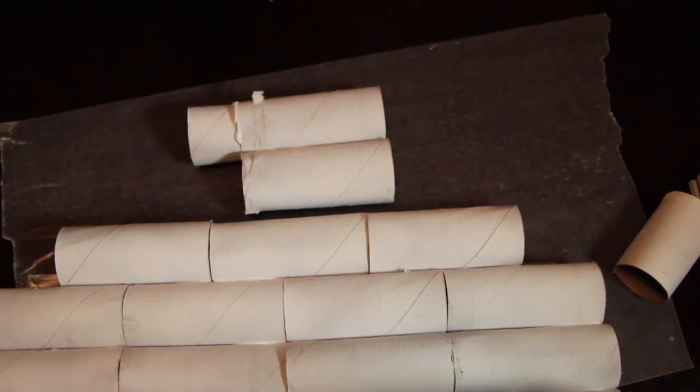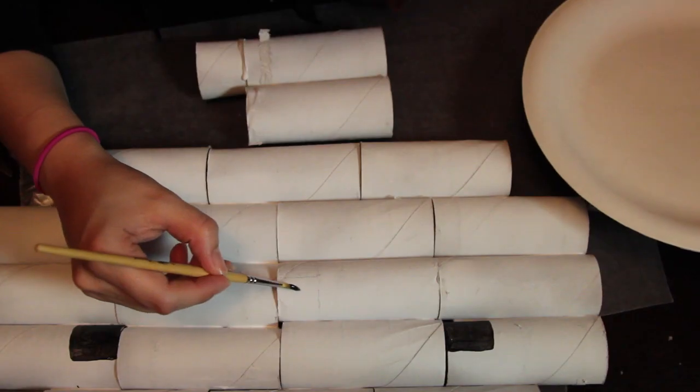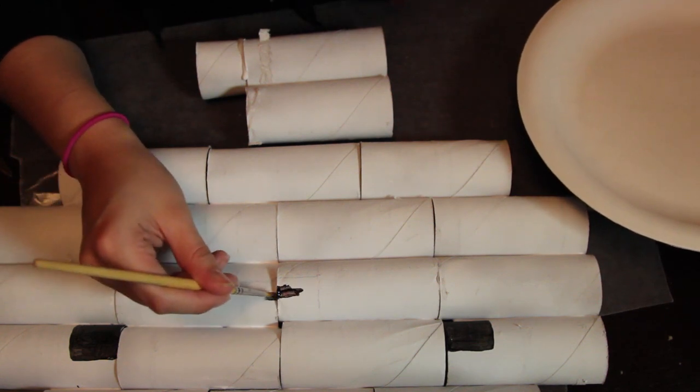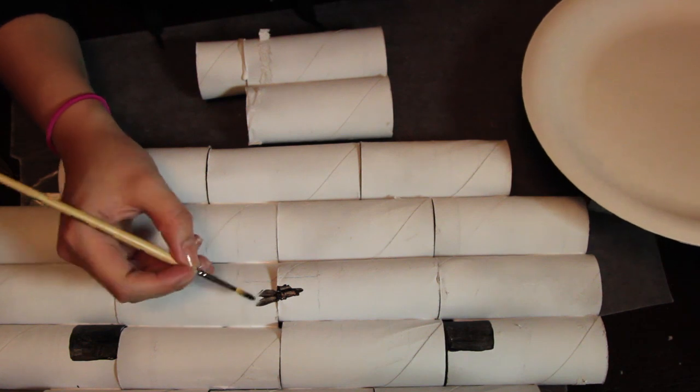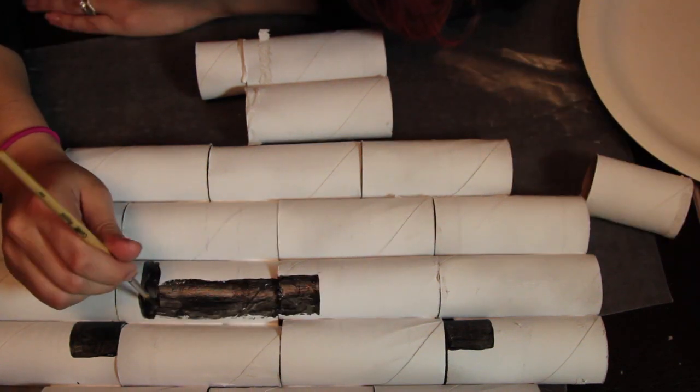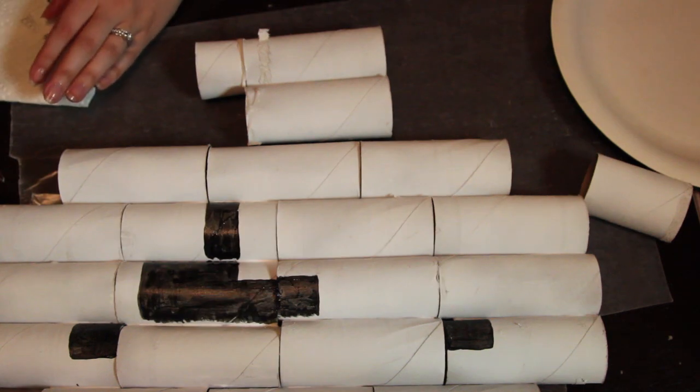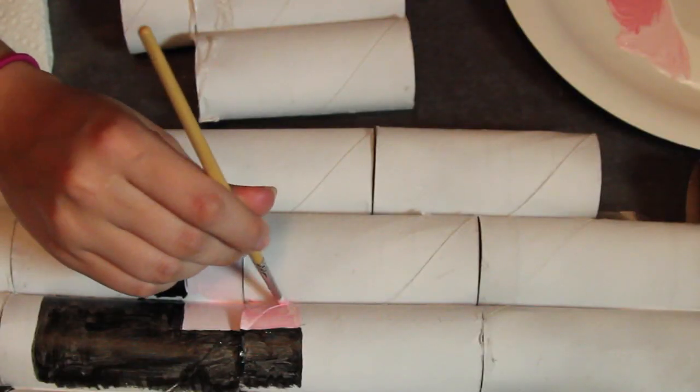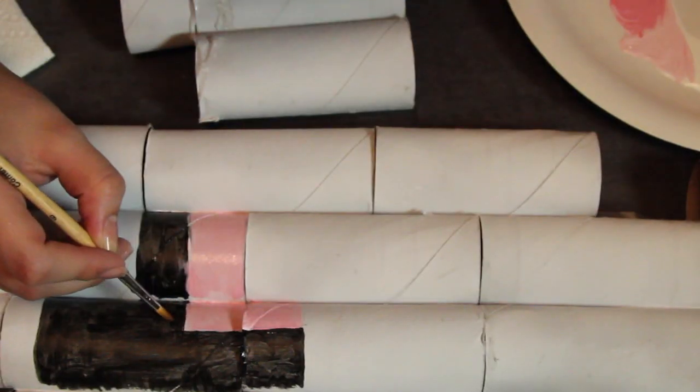So once your glue has dried or is still in the drying process, you can then go ahead and start to paint on Gomez's face. So I decided to make him smiling because I love his cute, adorable little smile. Make a sort of T shape. You can draw on this to outline so you know where you're going to paint. You're going to paint most of it black and also put a little L shape of pink for his tongue.